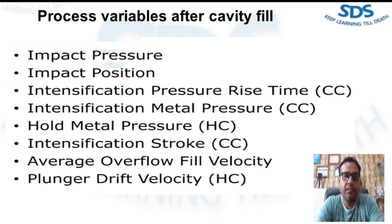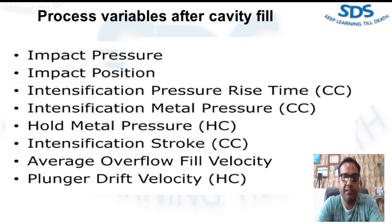Another variable is intensification metal pressure. This is the metal pressure, typically in pounds per square inch, applied to the biscuit during the intensification phase of the shot. It is best calculated as the intensifier accumulator pressure multiplied by the hydraulic cylinder area, then divided by the plunger area. Pressure-tight castings or castings requiring low levels of porosity may require intensification metal pressure of at least 8,000 to 20,000 psi.